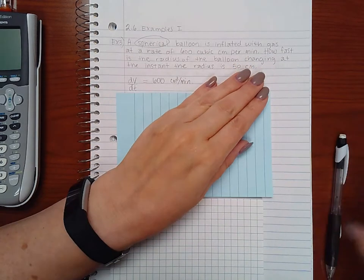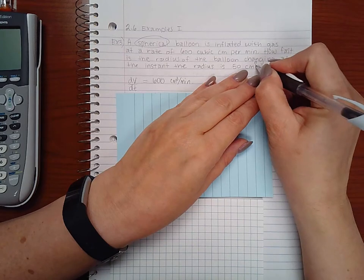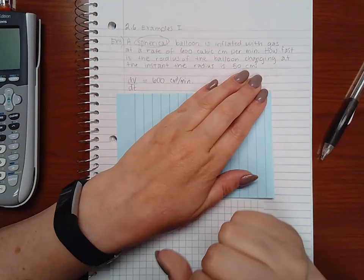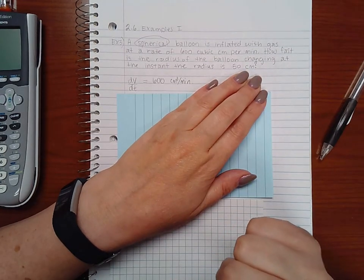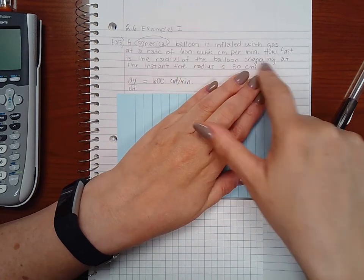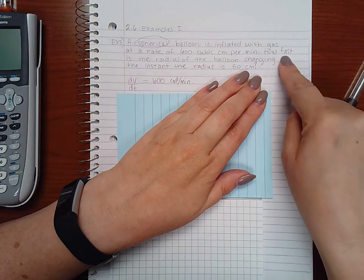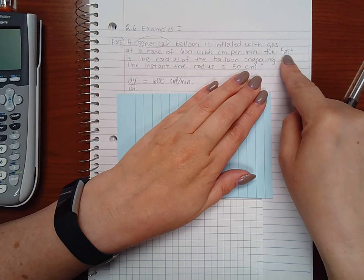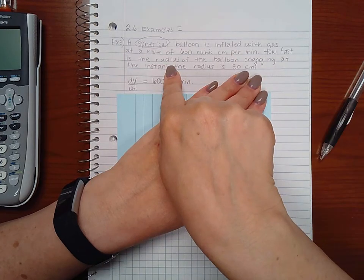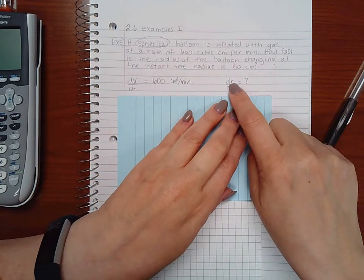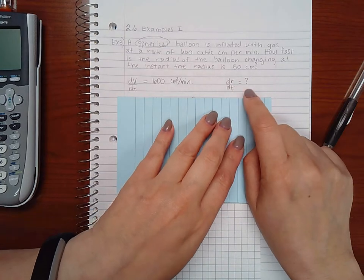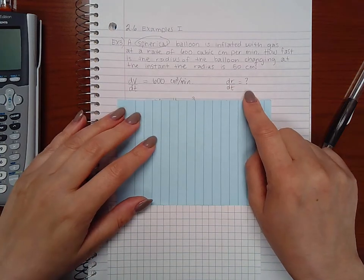Now the second sentence says how fast—and this is a question, so there probably should be a question mark there—how fast is the radius of the balloon changing? How fast is a rate again. And they want the rate of the radius, which means the derivative of the radius. That's what they're asking me for.